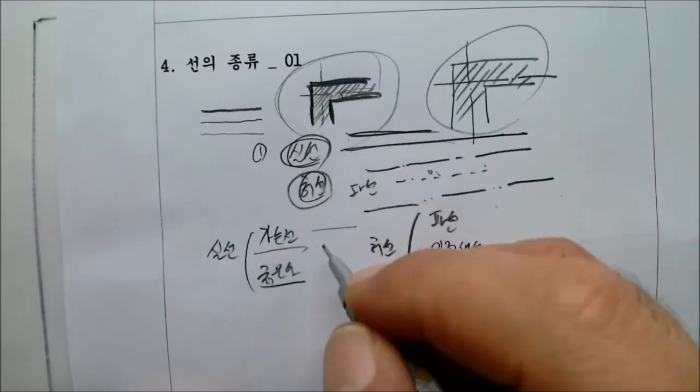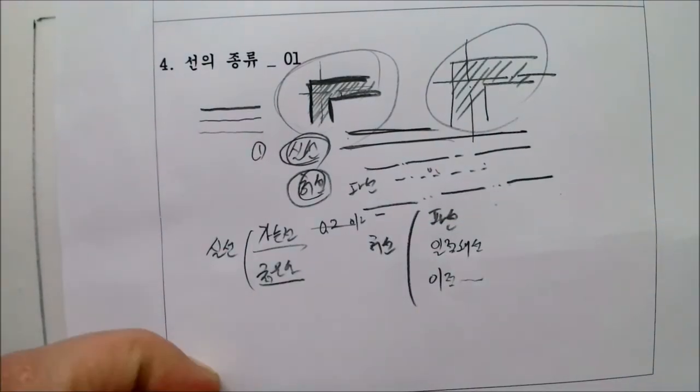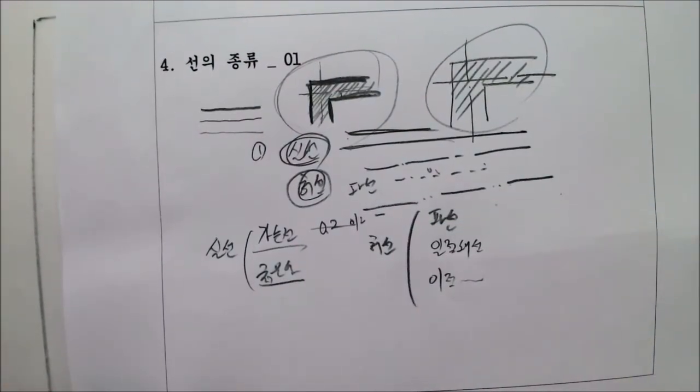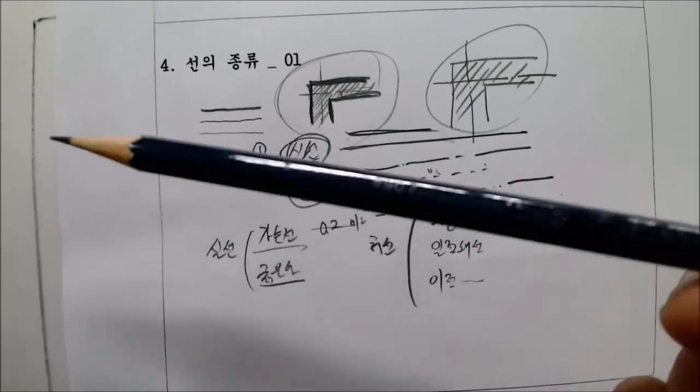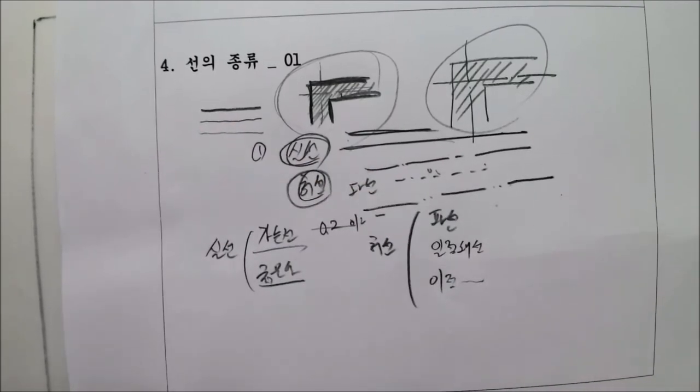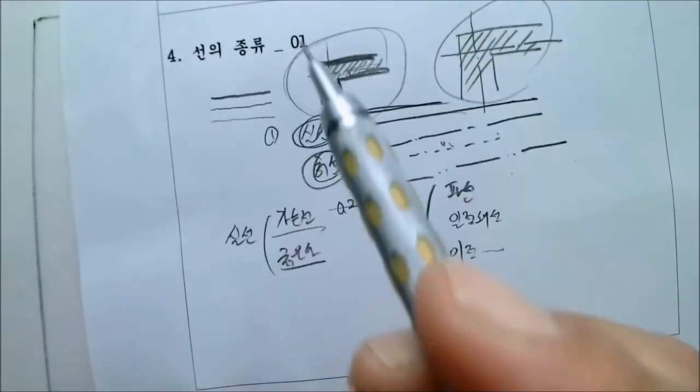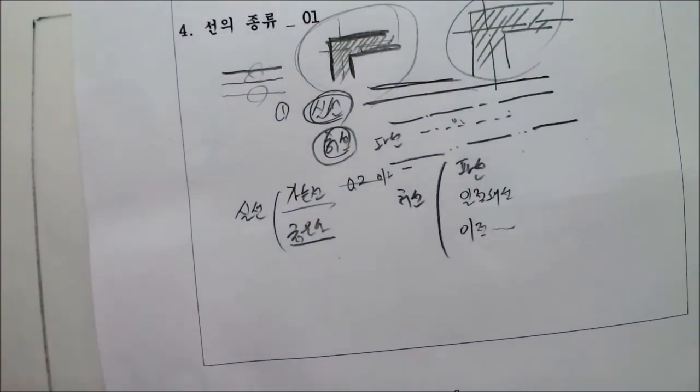가는선은 얇게 얼마? 0.2 이하입니다. 어떤 친구들은 그래요? 선생님 가는선을 쓰려고 0.3mm 자꾸 사야되요? 아 예. 돈 많으면 사면 됩니다. 그런데 선생님은 딱 제도할 때는 이것만 쓰면 돼요. 6H 아주 날카롭게 깎았죠? 가상선을 긋고 선생님이 도면 그리는 거 보여 드릴게요. 그 다음에 9mm 하나만 쓰면 돼요. 9mm 가지고 다 표현이 됩니다. 왜? 손에 힘을 가지고 다 충분합니다.